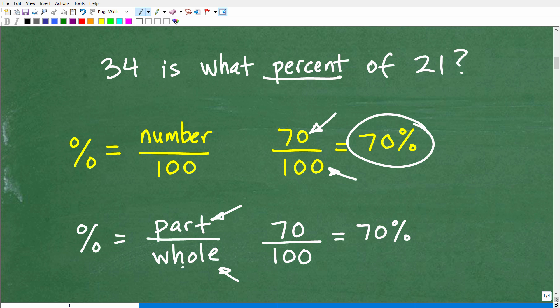Okay, so the whole test was worth 100 points, but you got part of the points. You got 70. So you got 70 out of 100. So, again, you got 70 percent. So this is a good model as well to think of percent.